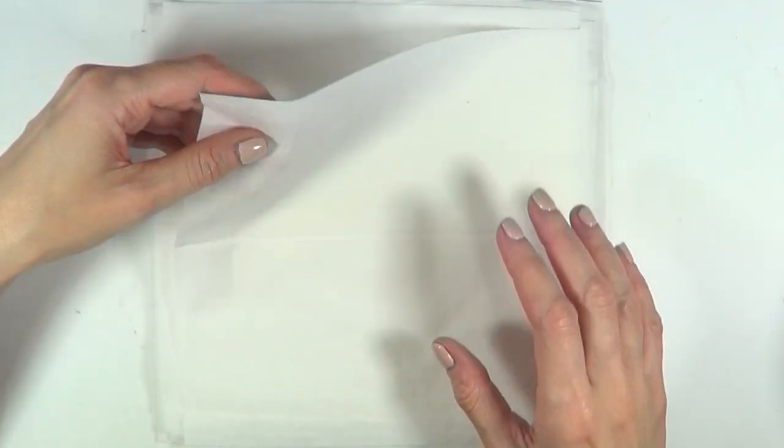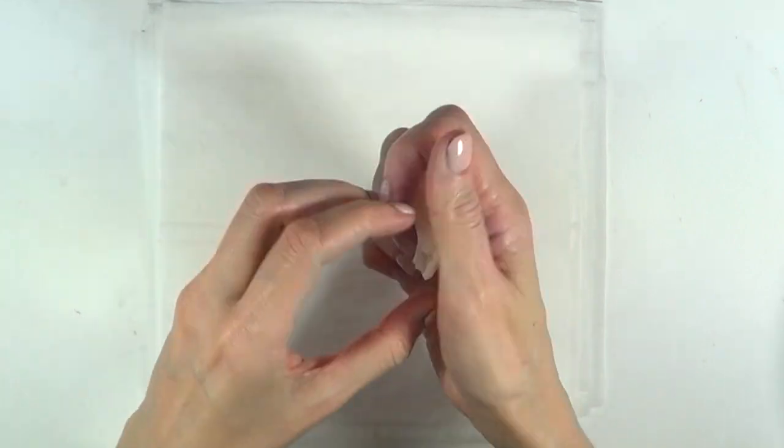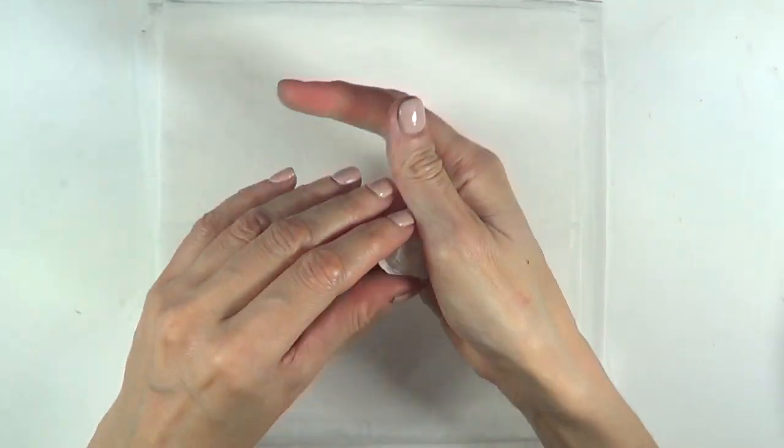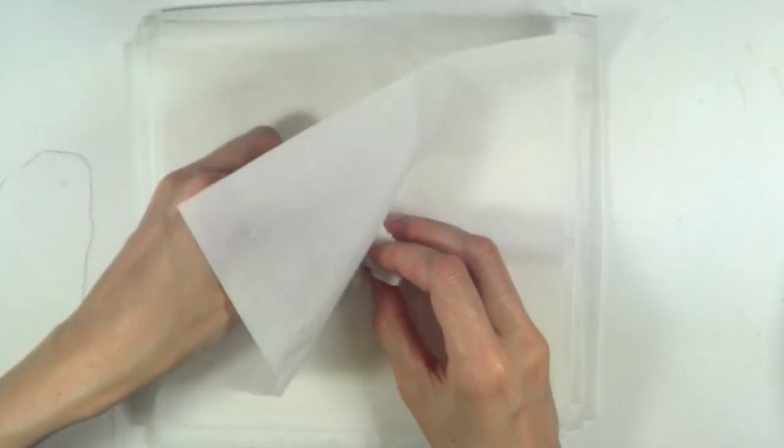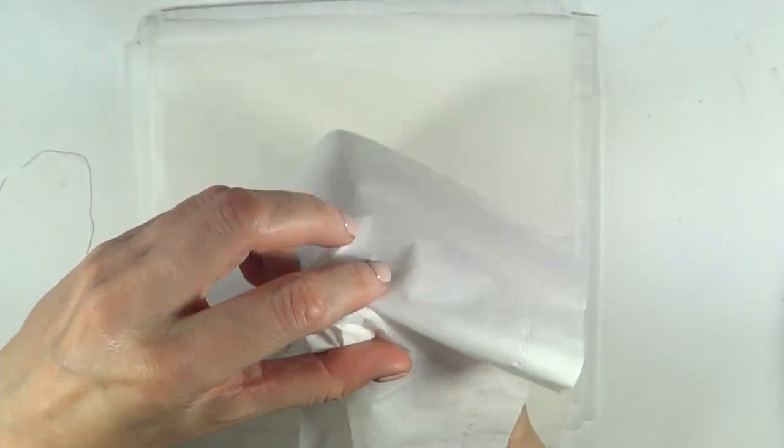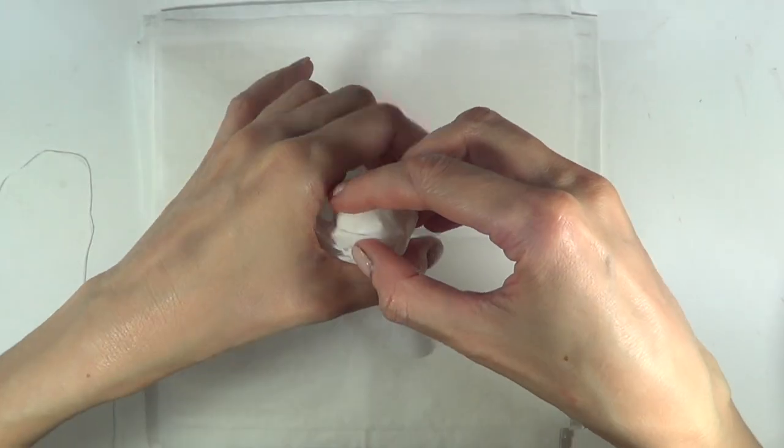I'm going to be using a bunch of napkins. I'll start by squeezing one in the shape of a ball and that's going to be the head of the ghost. Then I'm going to use another napkin to cover that one and that will be the body of the ghost.